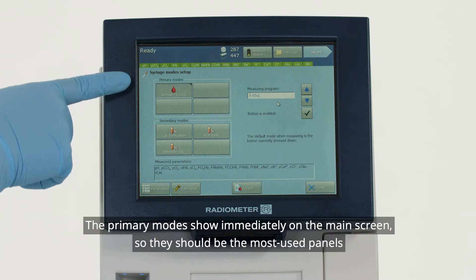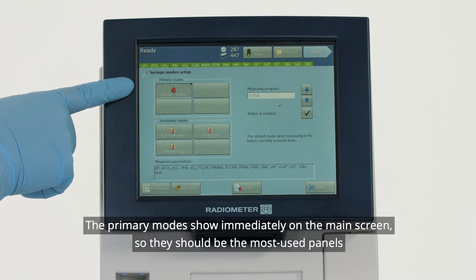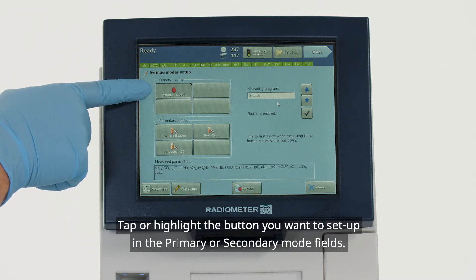The primary modes show immediately on the main screen, so they should be the most used panels. Tap or highlight the button you want to set up in the primary or secondary mode fields.